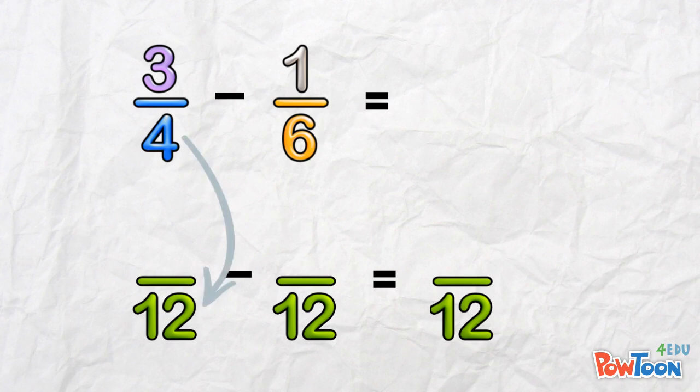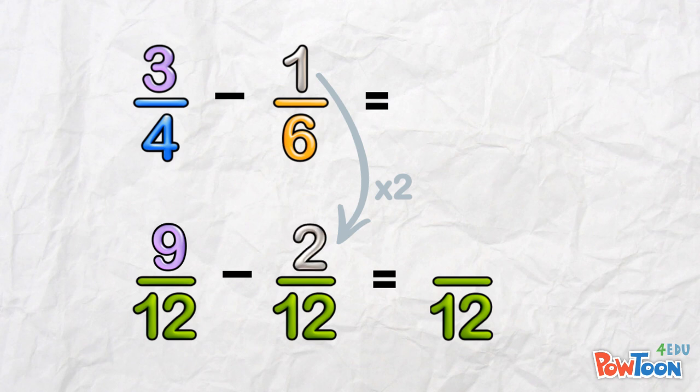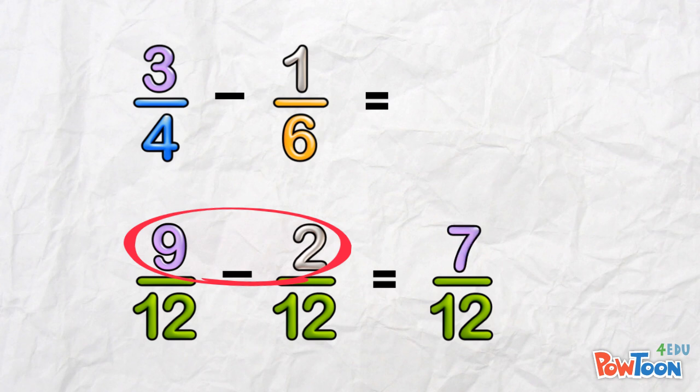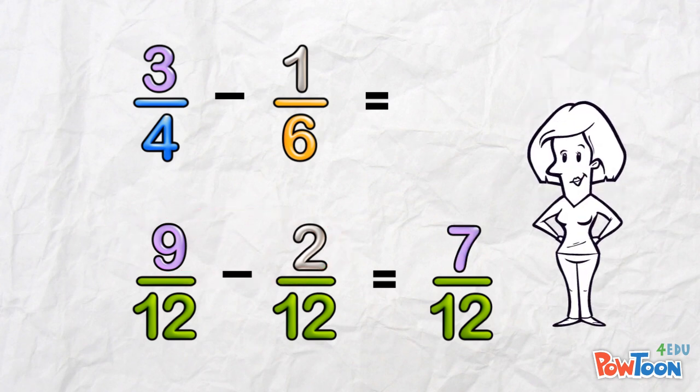We multiply 4 by 3 to get 12. So we do the same to the numerator. 3 times 3 is 9. And for 1 sixth, we multiply 6 by 2 to get 12. So we do the same up top. 2 over 12. And now we work with the numerators. 9 minus 2. That's 7 over 12. We can't reduce this fraction, so we're all done.